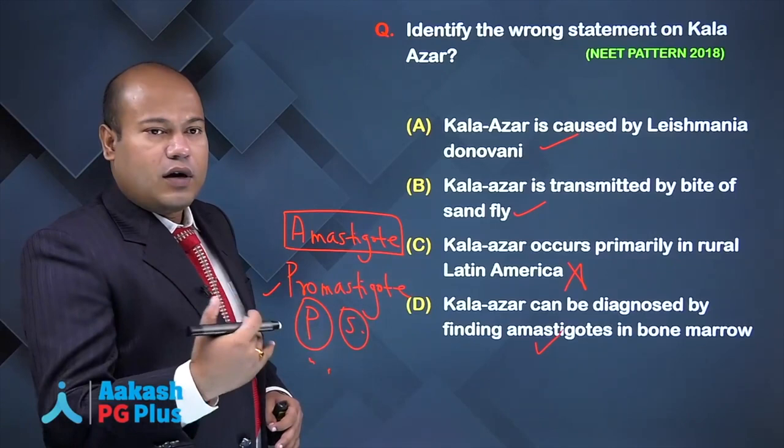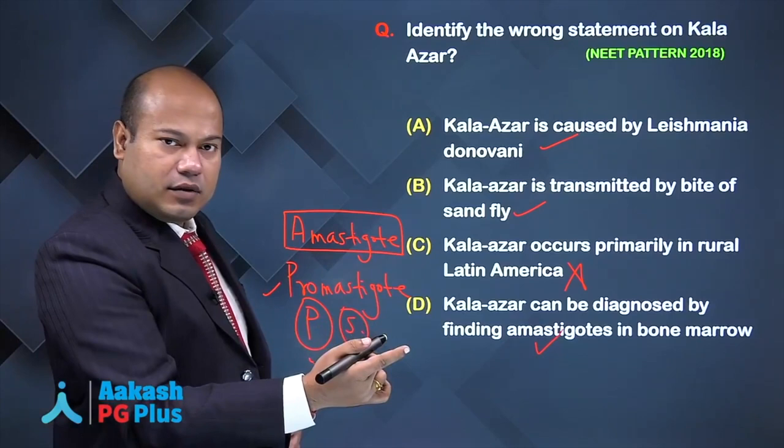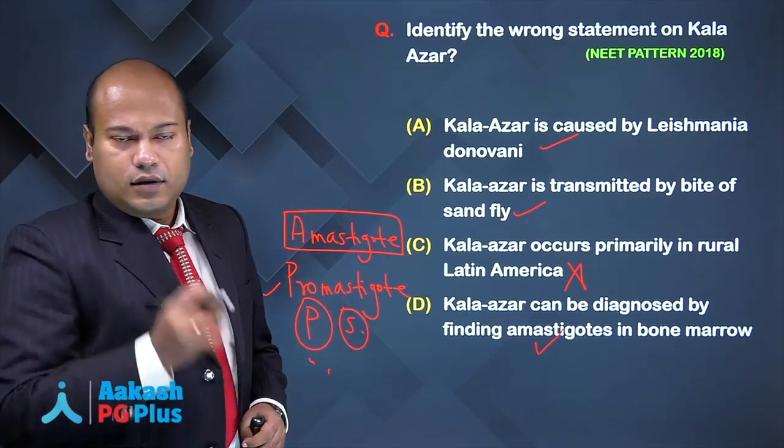When a non-infected sandfly bites an infected human, it sucks blood containing amastigotes. Inside the sandfly, amastigotes convert back into promastigotes. That is why the Leishmania cycle is called the amastigote-promastigote cycle. Remember PS: promastigote in sandfly.